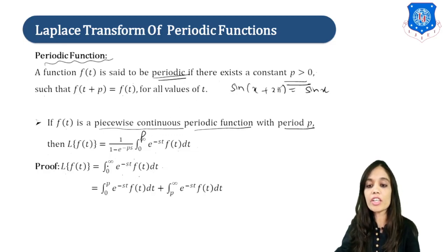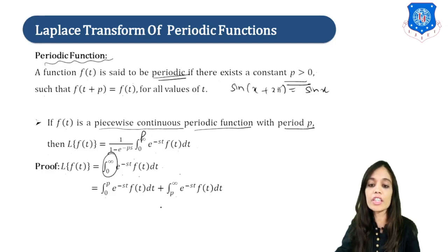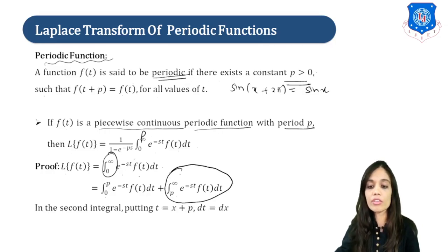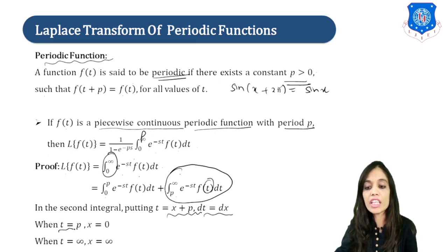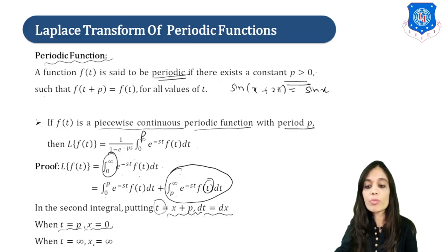We are given the definition: Laplace of f(t) is the integral from 0 to infinity of e raised to minus st times f(t) dt. Since the function is periodic, we split the integration in two parts: from 0 to p, and from p to infinity. In the second integral, we replace t by x plus p, so dt becomes dx. Changing the limits: when t equals p, x equals 0; when t equals infinity, x equals infinity.